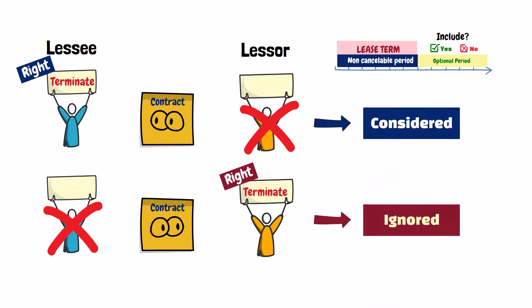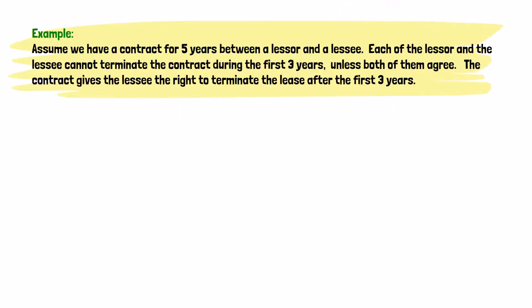Let us make this more clear with an example. Assume we have a contract for five years between a lessor and a lessee. Each of the lessor and the lessee cannot terminate the contract during the first three years, unless both of them agree.